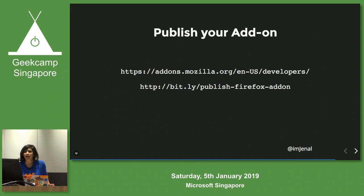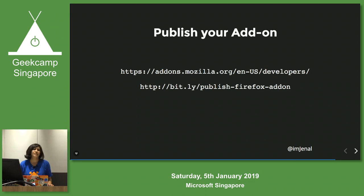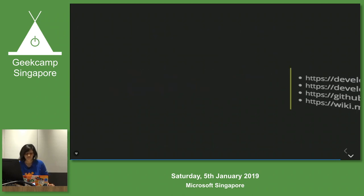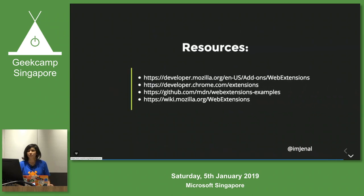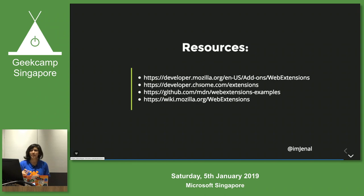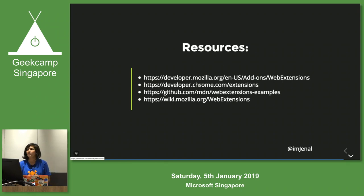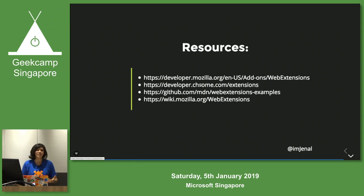Next is how to publish your add-on — there are a few links you can read about after this session. These are a few resources. Chrome has its own developer resources, and Mozilla also has the Mozilla Developer Network, which we call MDN. It has all web technology resources like HTML, CSS, JavaScript, as well as VR and other open-source web technologies.